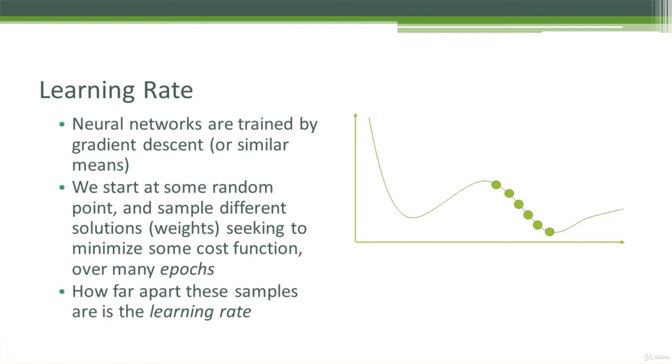So the learning rate is all about how far apart those samples are. So you see here, we might have started up here, and our learning rate said, OK, I'm going to try another point here, and I'm going to try again here, so on and so forth, until I finally find the lowest point along this curve and call that my best solution.